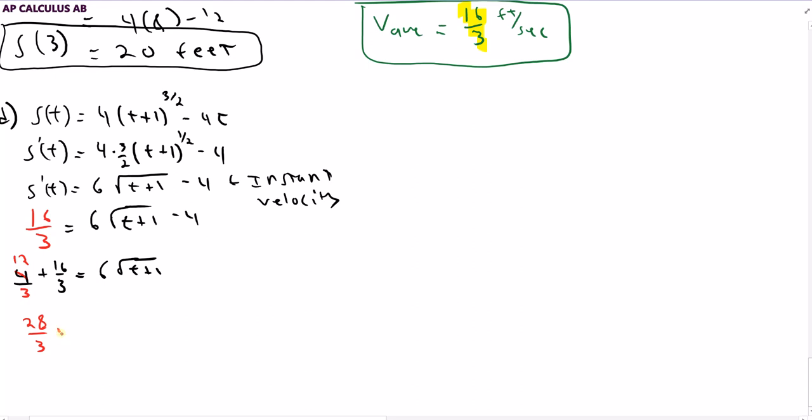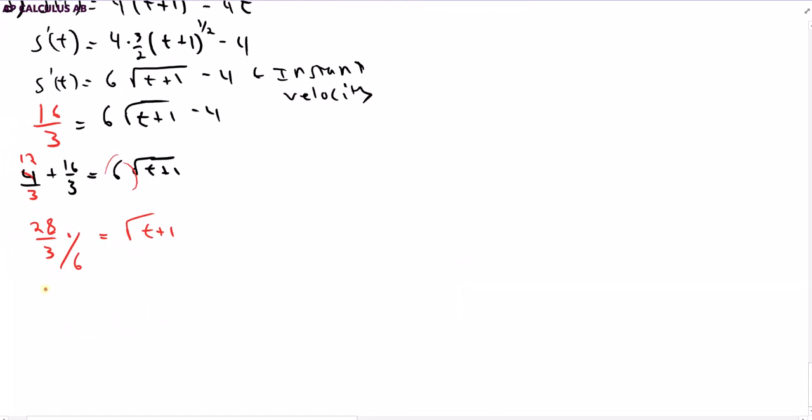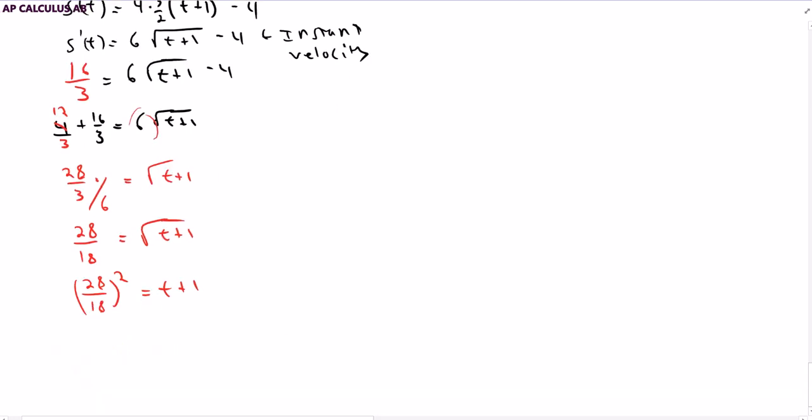And then to solve this equation, we're going to divide both sides by 6. So divide this by 6 and we're going to get square root of (T + 1). I'm getting rid of this 6, dividing both sides by 6. And so this is 28 over 18 equals square root of (T + 1). And we square both sides. So it's (28/18) squared equals T + 1. And lastly, we just subtract that 1. And we get (28/18) squared minus 1 equals T.